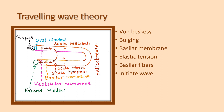The wave is transmitted from the base — near the round window — to the apex, which is near the helicotrema. This wave is called the traveling wave.